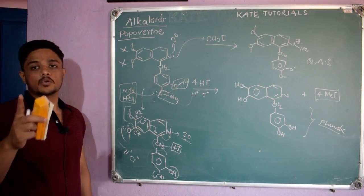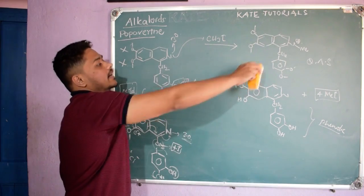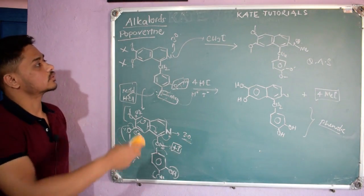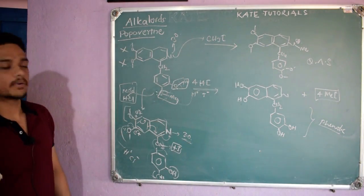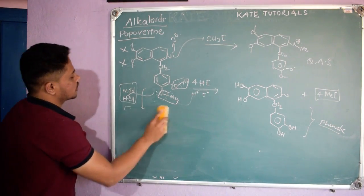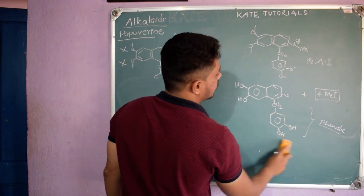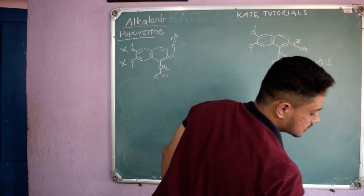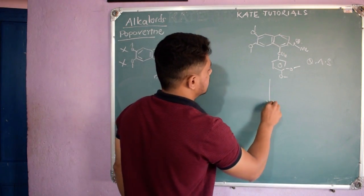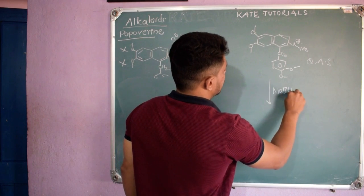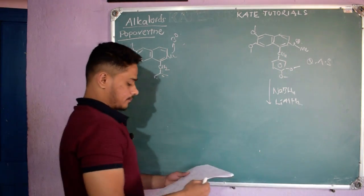Remember for exams: they may give you papaverine plus a methyl halide and ask you to write the structure of the product. You should know the structure of papaverine and the reaction with methyl halide. Now, to the quaternary ammonium salt (papaverine + CH₃I), if we add a reducing agent like NaBH₄ or LiAlH₄...